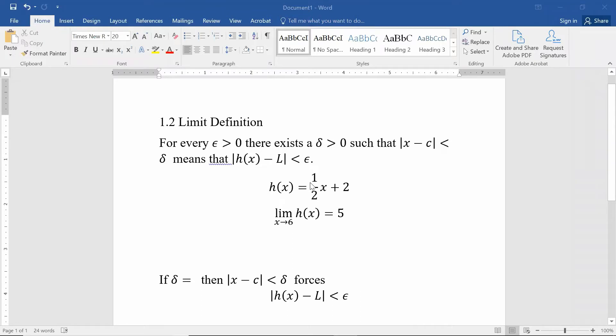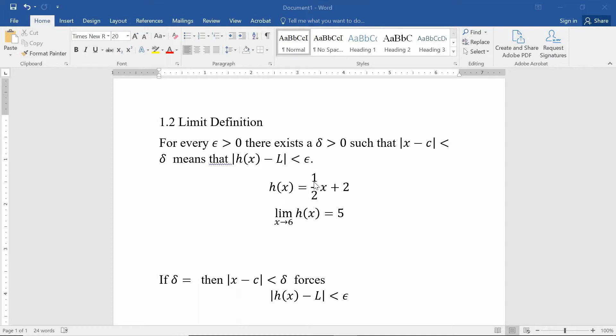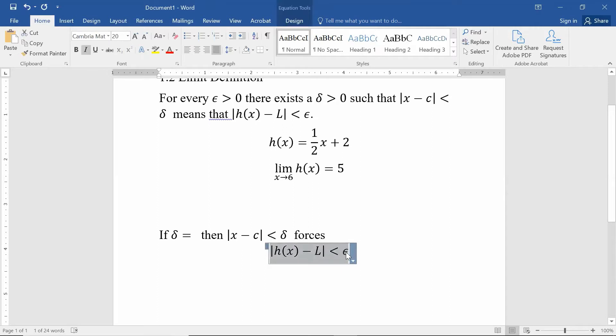We have this h(x) = 1/2x + 2, and we know the limit, or we want to get evidence to show that the limit of h(x) as x approaches 6 is 5. So the goal is to say if delta is some number, then |x - c| less than delta forces our output minus L less than epsilon. Now we have a couple of different epsilons to do this with.